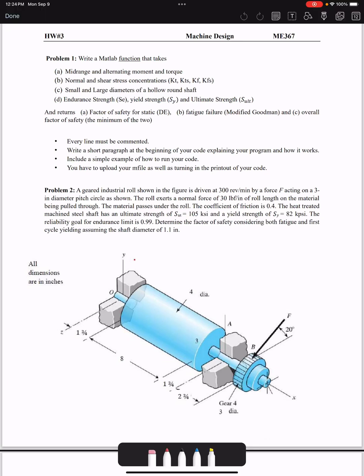Hello everyone, in this video I'm going to go over your Homework 3 to give you some hints that help you complete it. The first problem wants you to write a MATLAB function that takes the midrange and alternating moment and torque.